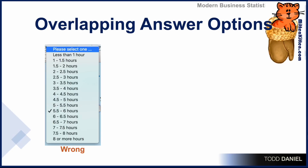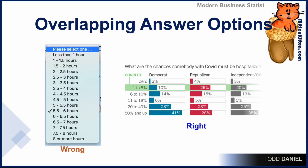Now in this example, we've asked, what are the chances that someone with COVID must be hospitalized? The correct answer is one to five percent, and we can see how people respond based upon their political ideology. The values run from zero, one to five, six to ten, eleven to nineteen. In this case we do not have overlapping answer options, and this is the way that the answer options should be constructed.